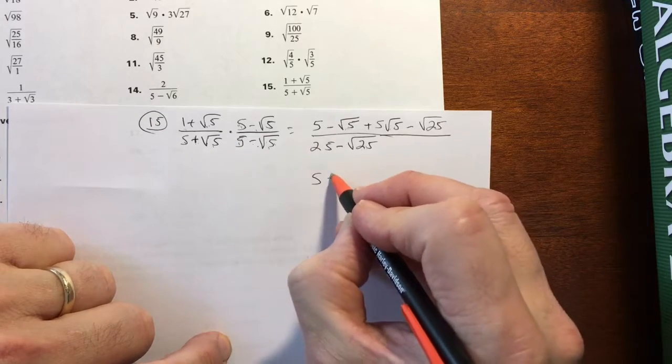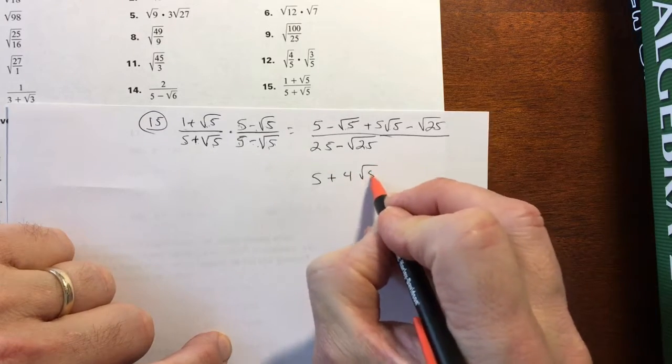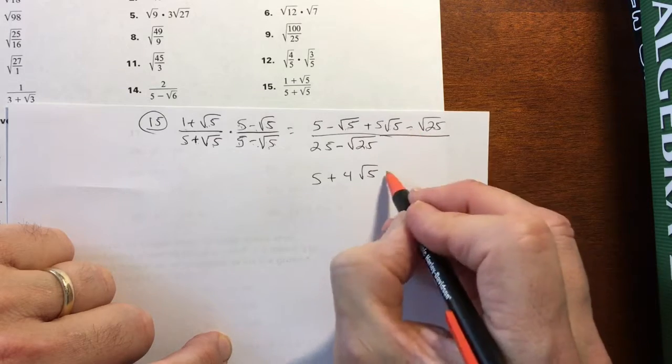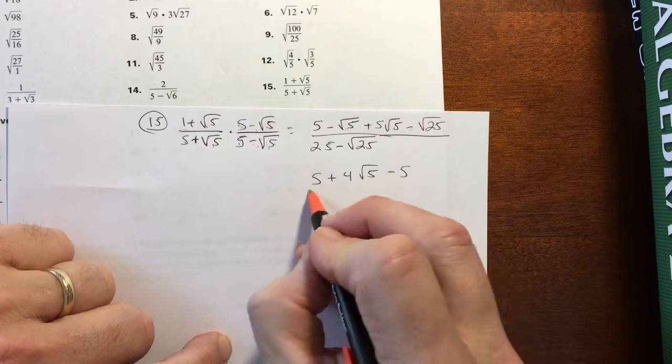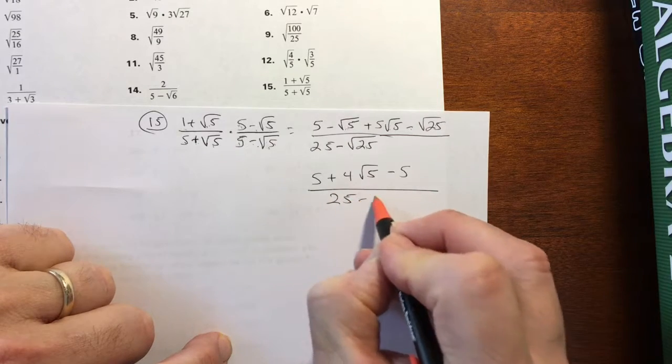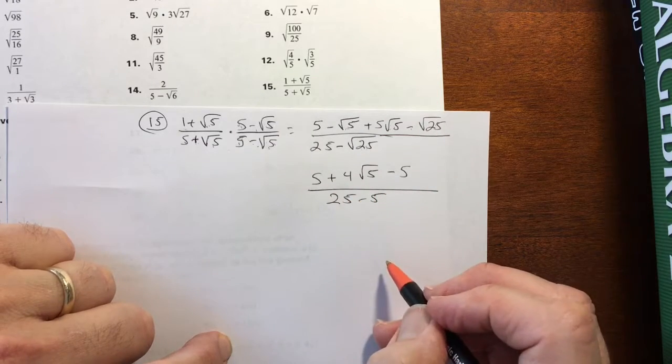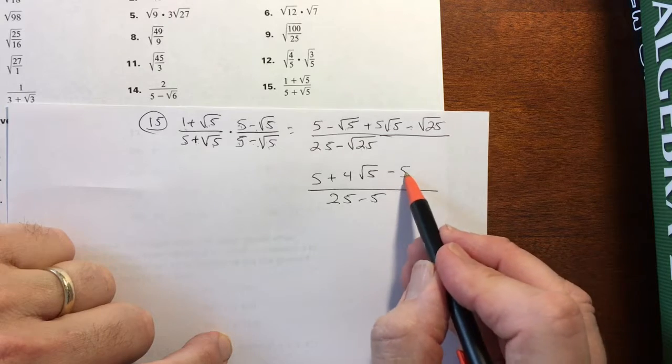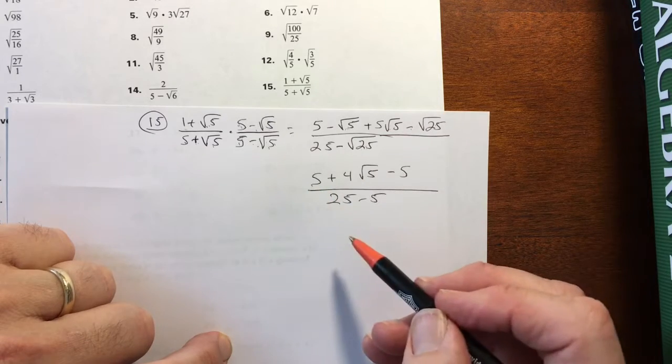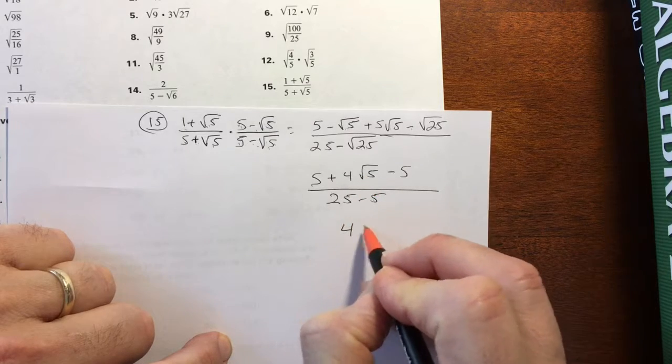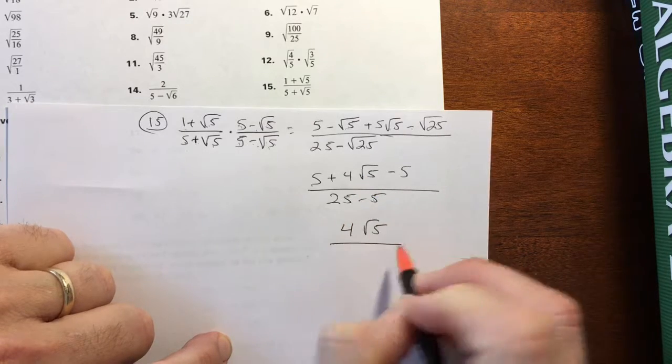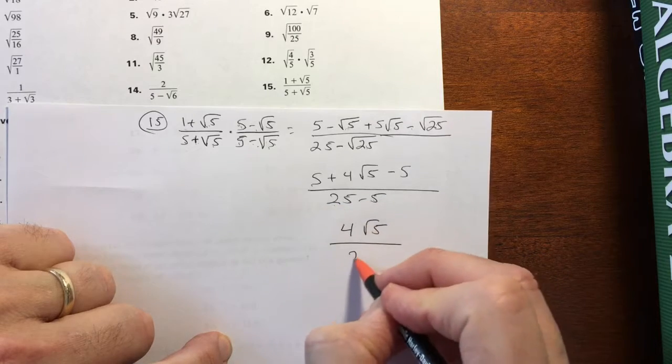So I'm going to have 5 minus, let's see, actually plus 4 square root of 5 minus 5, because the square root of 25 is 5. The denominator is 25 minus 5. All right, this negative 5 and this positive 5, they go away, and 25 minus 5. So the top just has 4 square roots of 5.